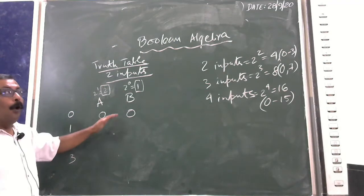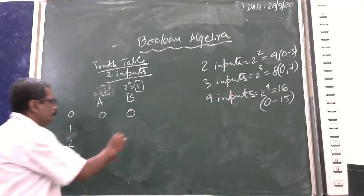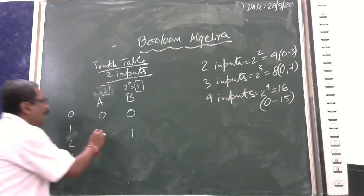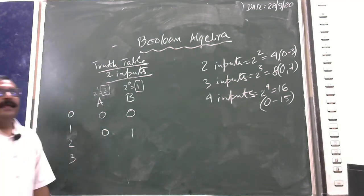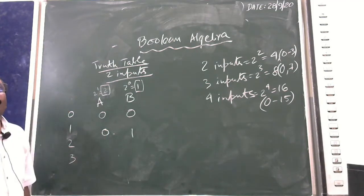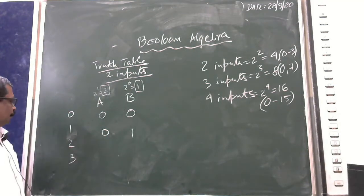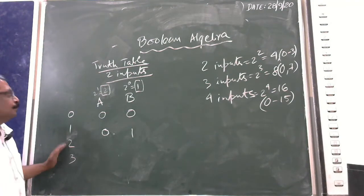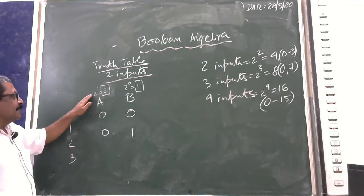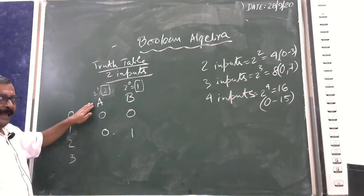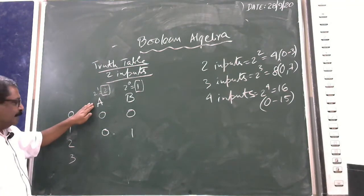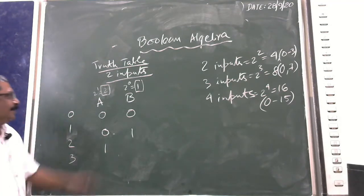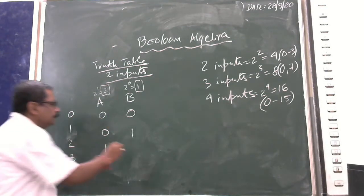For the value 0, neither A nor B is present, so both are OFF. For the value 1, B is ON and A is OFF. For the value 2, A is ON and B is OFF.